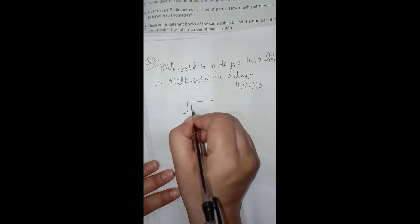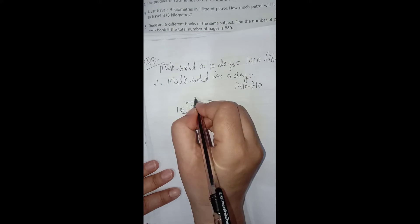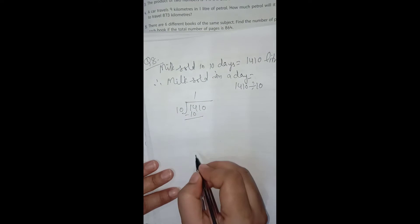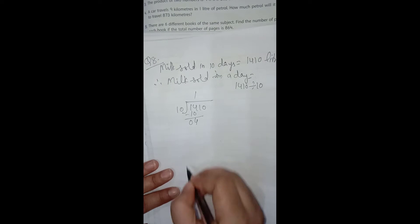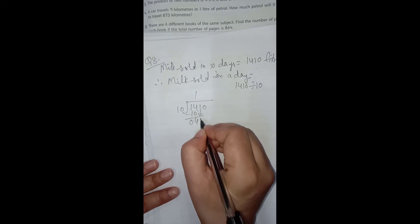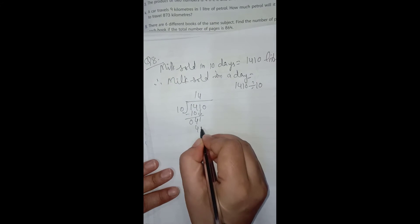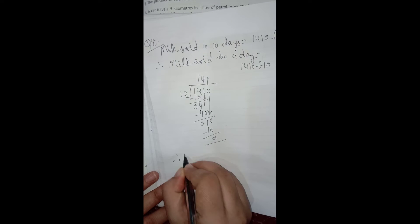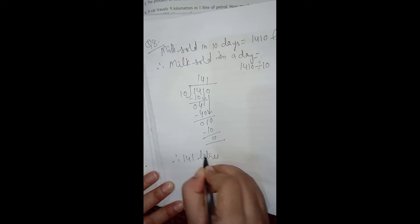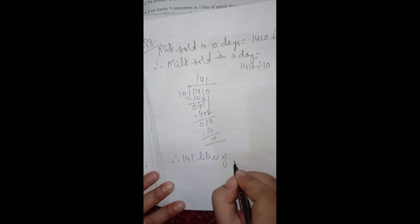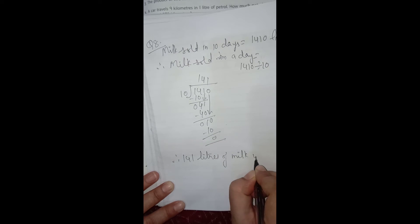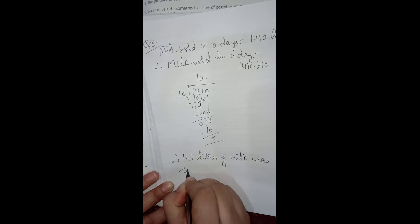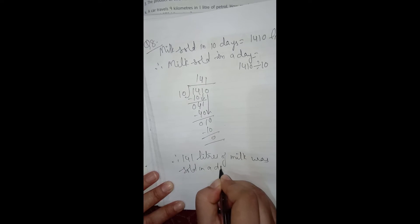Let us divide 1410 by 10. 10 ones are 10 because 10 twos are 20, which would be greater. After subtracting we get 4 as the remainder. Bringing down 1, 10 fours are 40, subtracting gives 1. Bringing down 0, 10 ones are 10, remainder is 0. Therefore, 141 liters of milk was sold in a day — every day 141 liters of milk was sold.